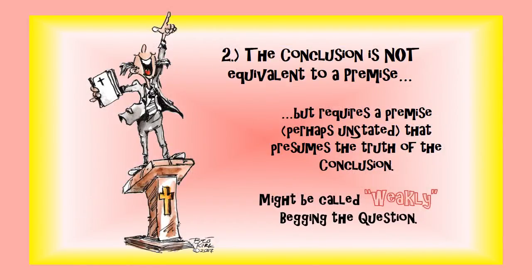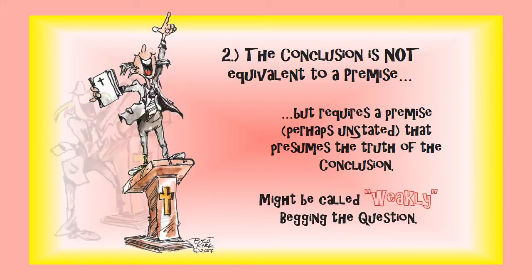Sometimes you have a conclusion that's not the same thing as a premise, but your premises require a perhaps unstated premise that presumes what you're trying to prove. This is sometimes called weakly begging the question, because nobody who was willing to buy into your conclusion would have likely given into your premise whether it was stated or not.